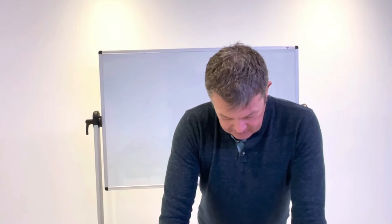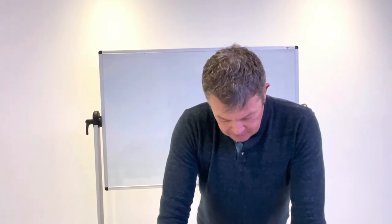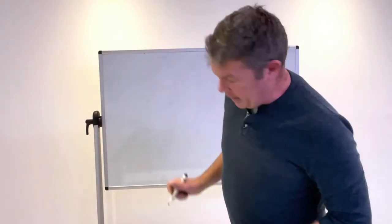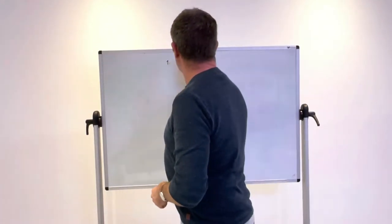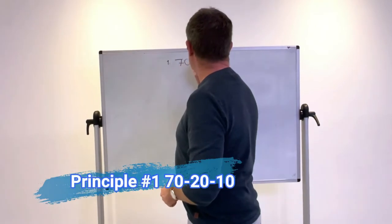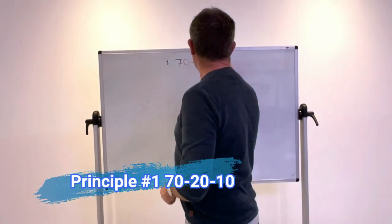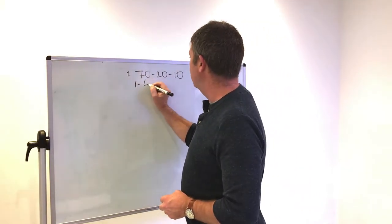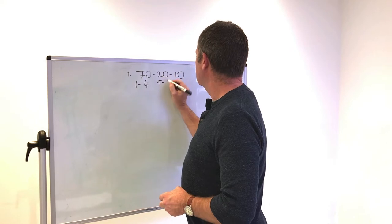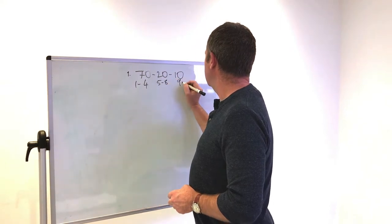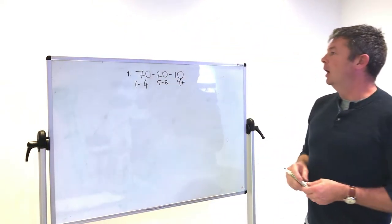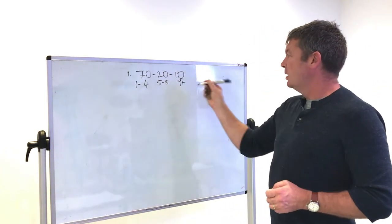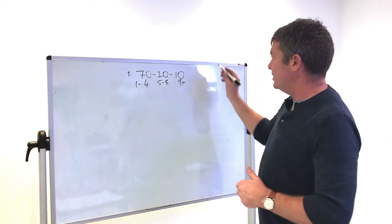So the two principles from the twelve principles set: number one is 70-20-10. We go shots one to four, shots five to eight, nine plus. I'll call it rally length. The pressure principle sets that happen at ATP down to club.